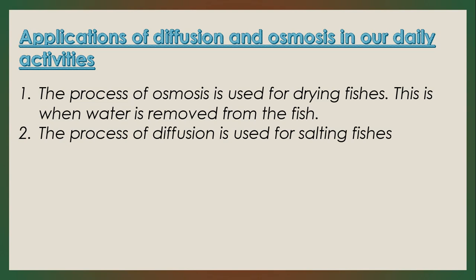The process of diffusion is also used for salting fish. Imagine how kubi is produced. The fish is placed in a highly concentrated salt solution. Because the environment of the fish is highly concentrated compared to the inside of the fish which is less concentrated, diffusion — the movement of particles or molecules from a region of higher concentration to a region of lower concentration — causes salt to move from the strong salt solution outside the body of the fish into the body of the fish. That is from a highly concentrated region to a low concentrated region. And that is diffusion.